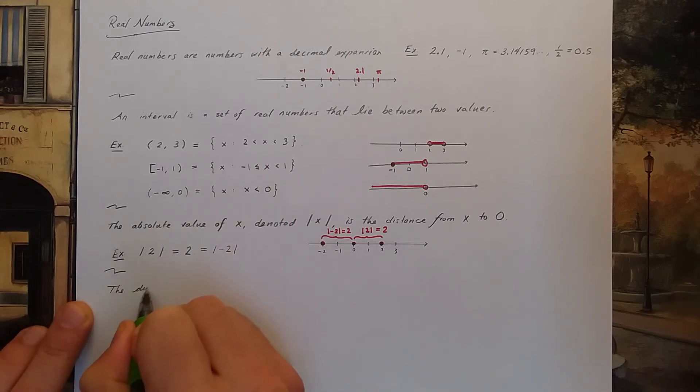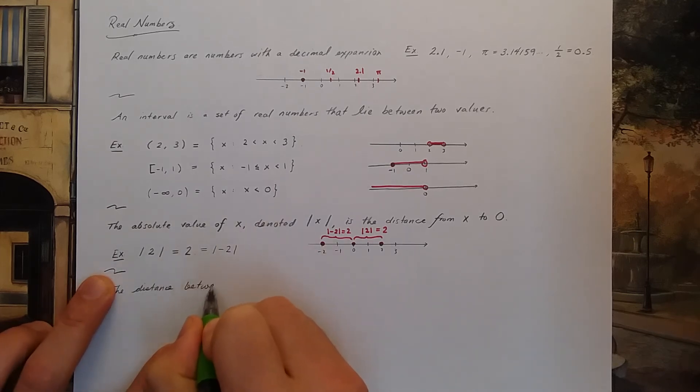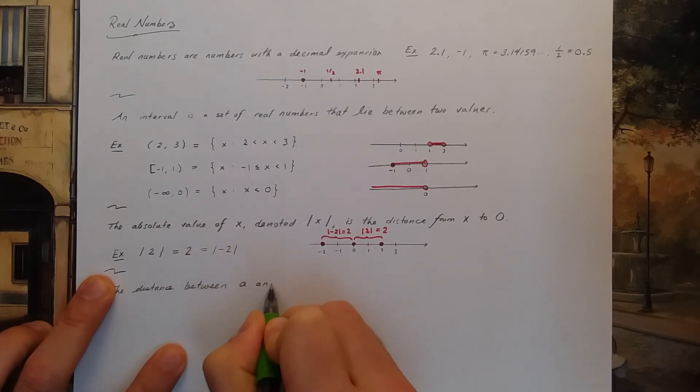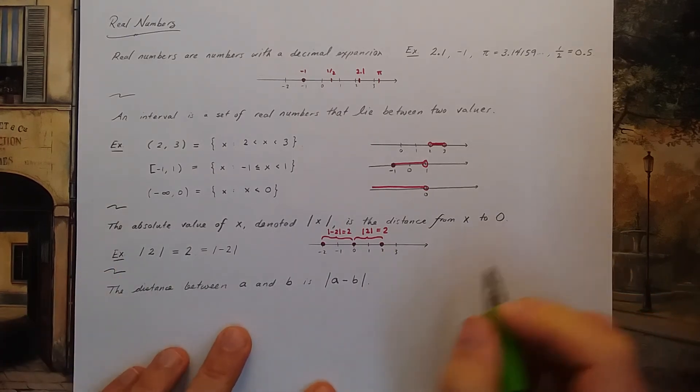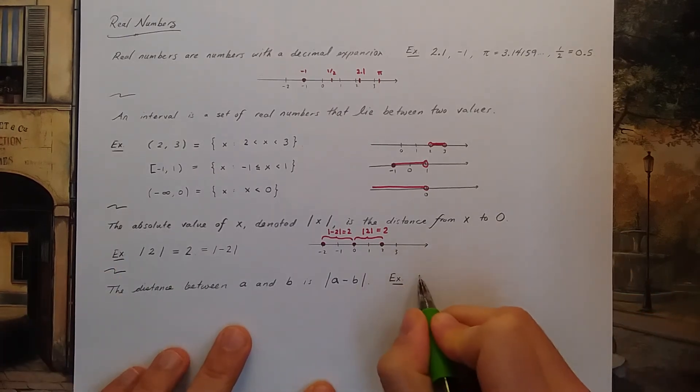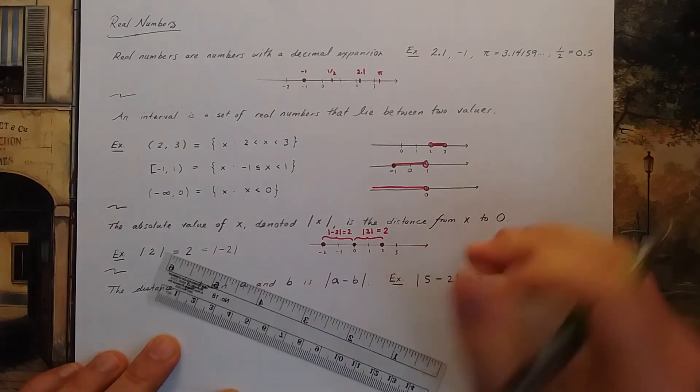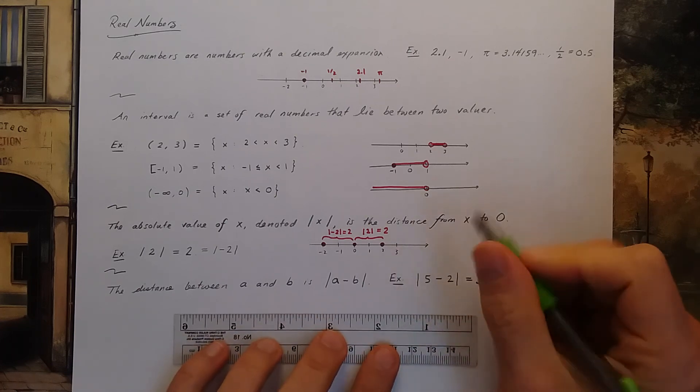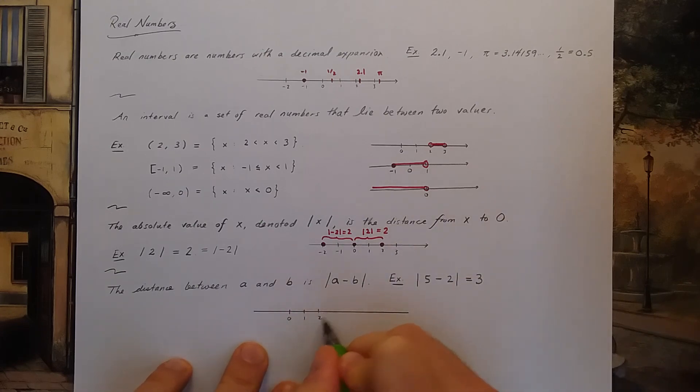Let me write one last sentence for this video. The distance between two real numbers a and b is the absolute value of the difference a minus b. As an example, the absolute value of 5 minus 2 is 3. That's because the distance between 5 and 2 is equal to 3. 0, 1, 2, 3, 4, 5. On the number line, here is 5, here is 2.